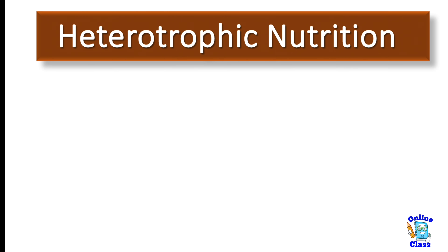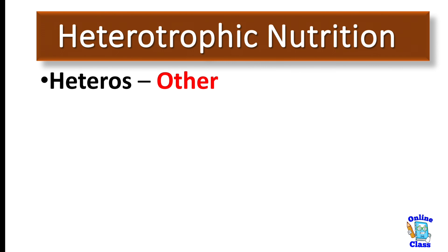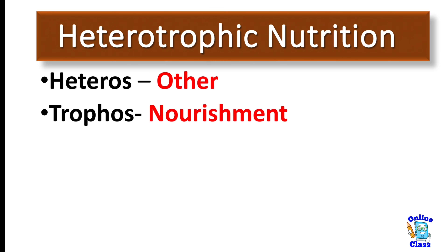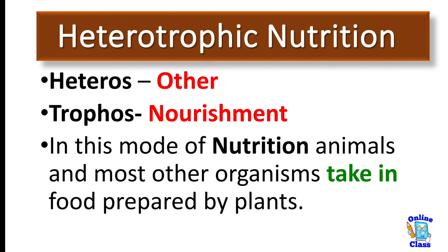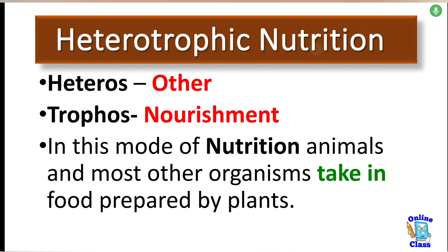Now what is heterotrophic nutrition? You might think that since we also cook food at home, does that count? Let me explain the difference. Heteros means other, and trophic means nourishment. So organisms that depend on others for their nourishment are called heterotrophs. In this mode of nutrition, animals and most other organisms — like human beings — take in food prepared by plants.